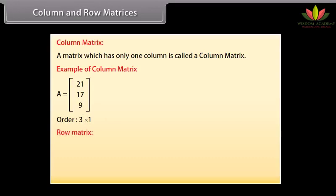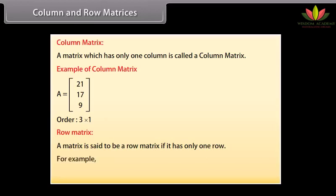Row matrix: a matrix is said to be a row matrix if it has only one row. For example, [3, 5, 1] is a row matrix as it has only one row.